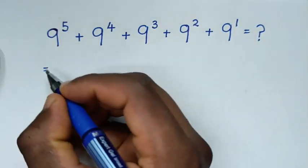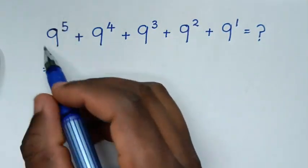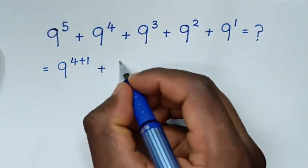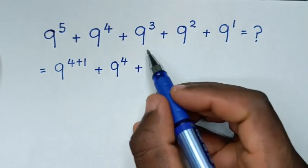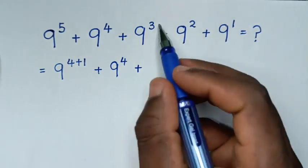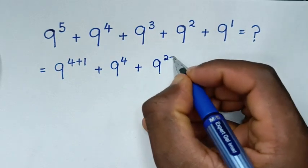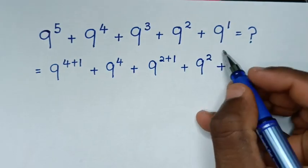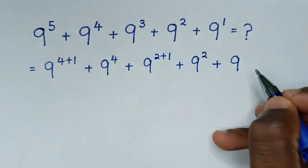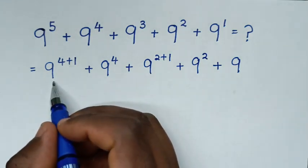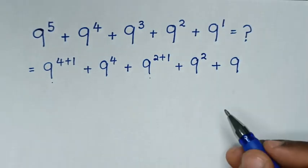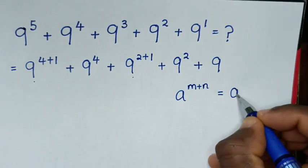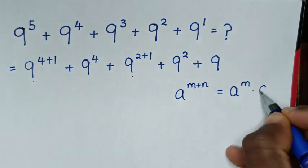So it will be equal to: from here, 9 power 5 is the same as 9 power 4 plus 1. Then plus this 9 power 4, plus 9 power 3, where 9 power 3 is the same as 9 power 2 plus 1. Then plus this 9 power 2, then plus 9 power 1, which is 9. From here, 9 power 4 plus 1 and 9 power 2 plus 1 are in the form of a power m plus n, which equals a power m times a power n.